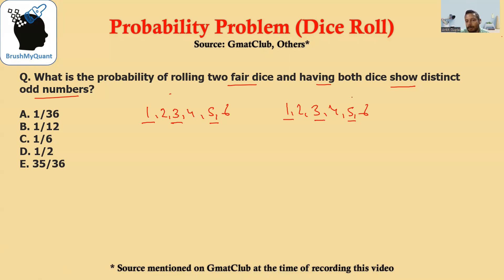Now we have to find what is the probability of having both dice show distinct odd numbers. So let's say the first dice is showing one as the number. The second dice has to show an odd number, but a distinct odd number. So that means the second dice can show three or the second dice can show five.